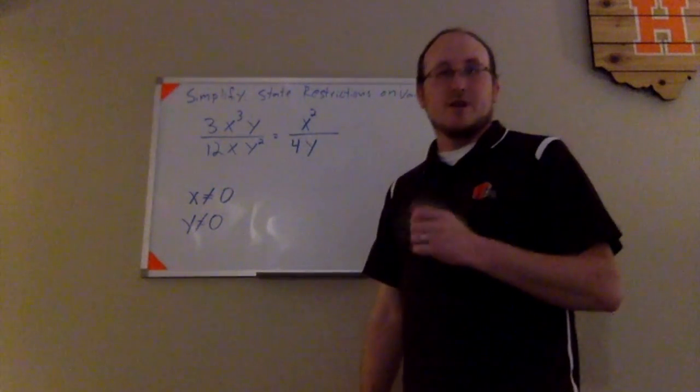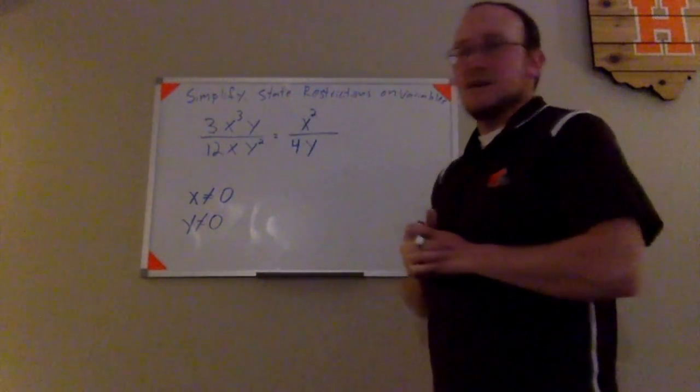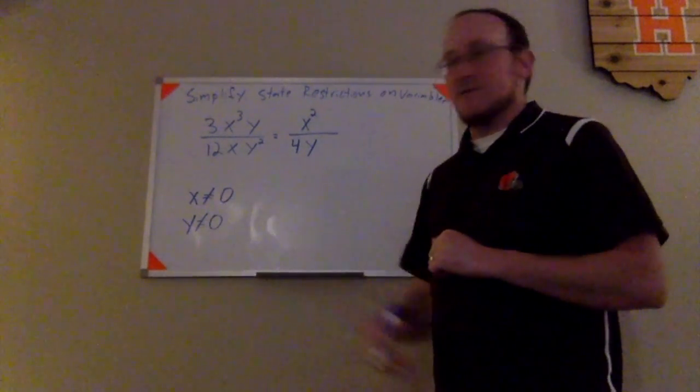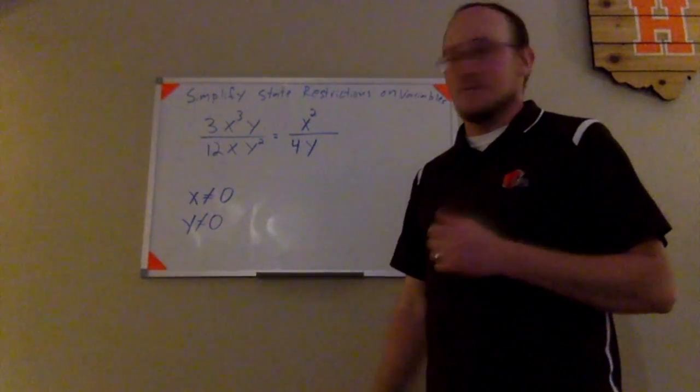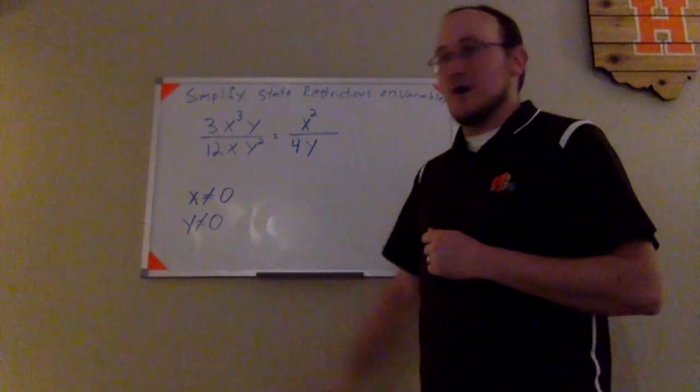We've done both things that the directions have asked us to do. We've simplified this rational expression and we've stated our restrictions on the variables: x cannot be 0 and y also cannot be 0.